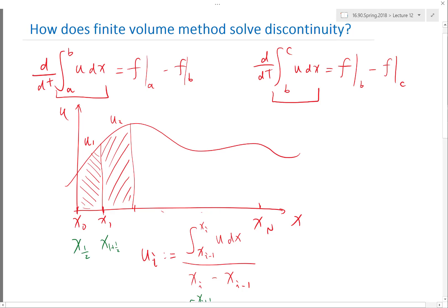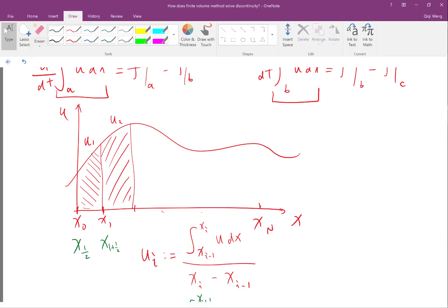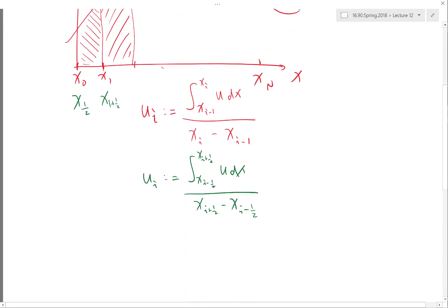How do you approximate the value of U, or ultimately the value of F, at the cell interfaces, is actually where the complexity of finite volume lies, right? So how do you compute F? The act of computing or approximating.